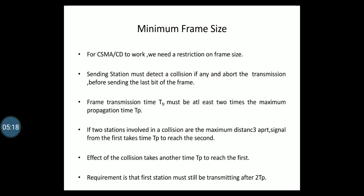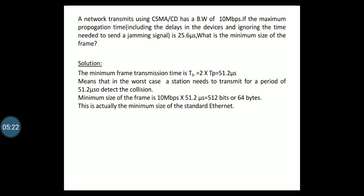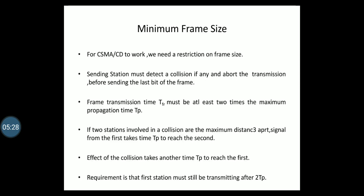Next, we look at minimum frame size. For CSMA/CD to work, there is a restriction on frame size. Before sending the last bit of the frame, the sending station must detect any collision and abort transmission. This is because once the entire frame is sent, the station does not keep a copy and does not monitor the line. Therefore, the frame transmission time T_fr must be at least two times the maximum propagation time T_p.